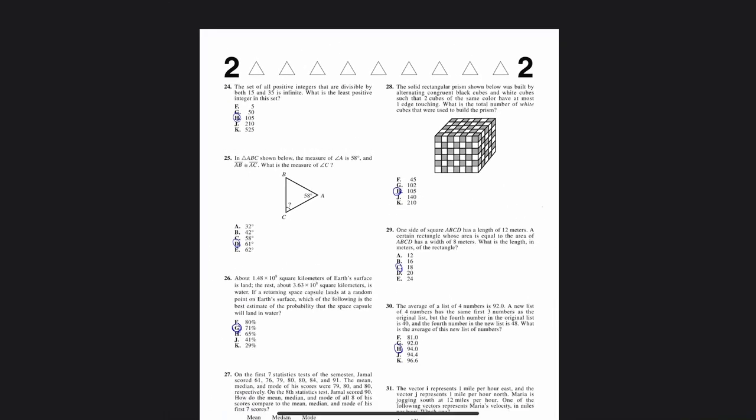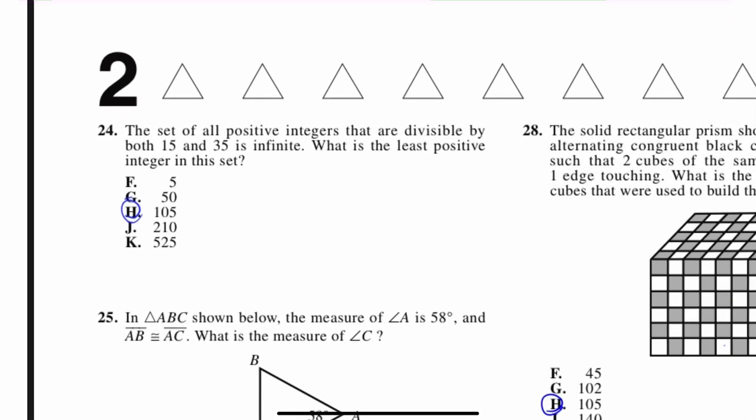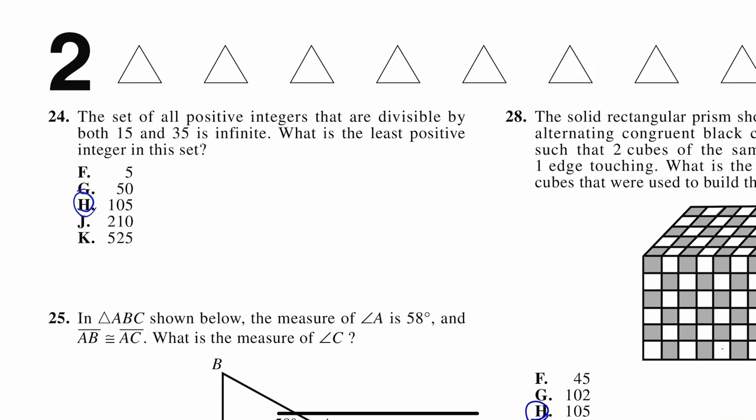Once again, I have all the answers circled from the answer key so we make sure we're getting back to the correct answer. Number 24: the set of all positive integers that are divisible by both 15 and 35 is infinite. What is the least possible integer in this set?